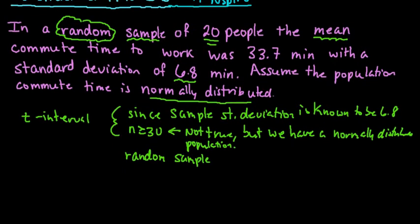Our level of confidence that we are using is 99%, so our confidence is 0.99. Our sample size is 20, which means that our degrees of freedom are 19 because the degrees of freedom is equal to n minus 1.